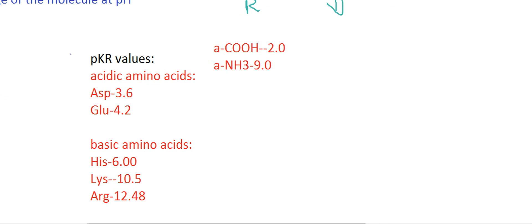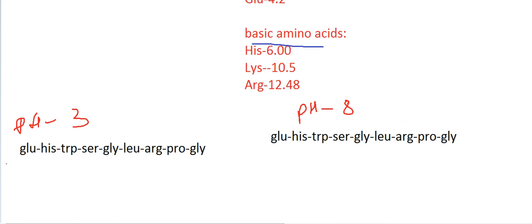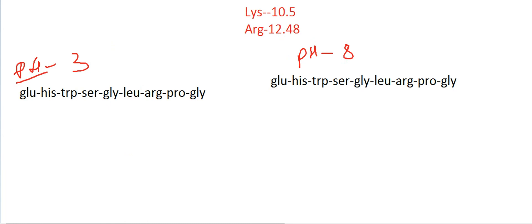These are the pKR values we have to remember: for acidic amino acids, basic amino acids, and for the terminal carboxylic and amino groups. You can pause this video and make a note of these pKR values. Now let's get back to the question. The polypeptide sequence is written out. We first write the alpha amino group and the last carboxylic group, then underline the charged amino acids: glutamic acid, histidine, and arginine — these are the only ones we need to consider.